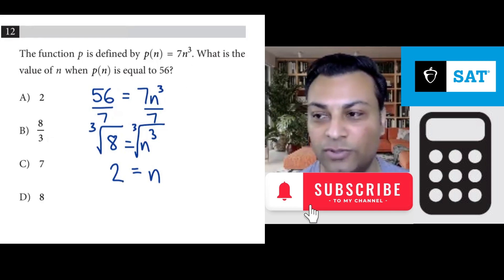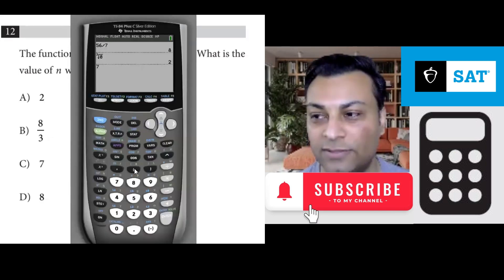7n³. So here we go. So we have 7 × 2³. That's the answer. That works. But why don't these work?